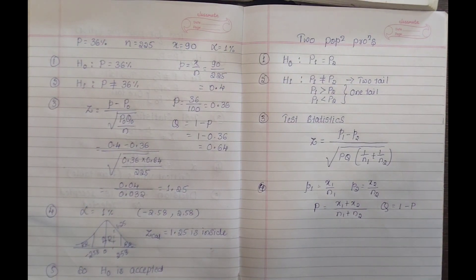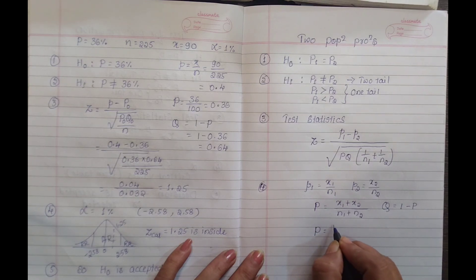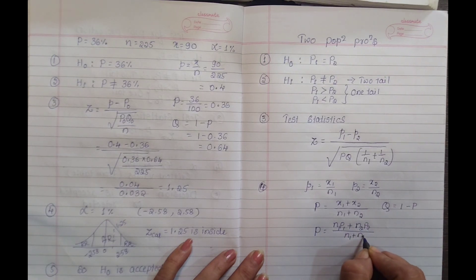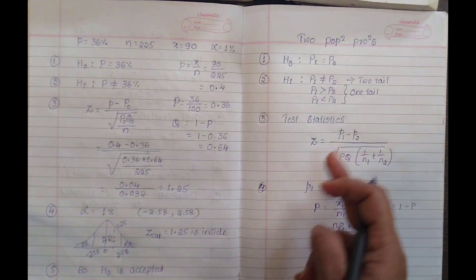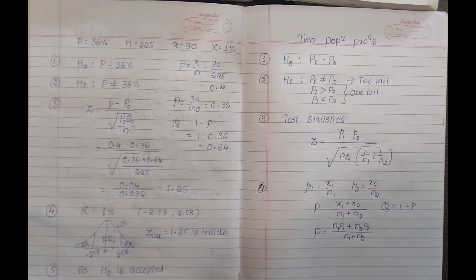Sometimes some problems give X and N values, and some problems directly give a proportion or probability value. In that case, capital P equals N1P1 plus N2P2 divided by N1 plus N2. According to the formula, you first calculate P1, P2, capital P, and capital Q, where Q equals 1 minus P.